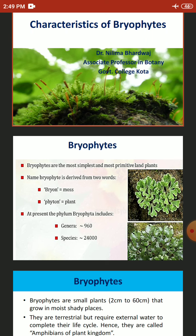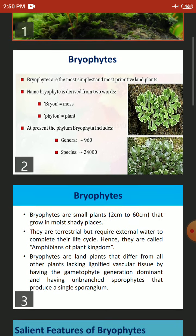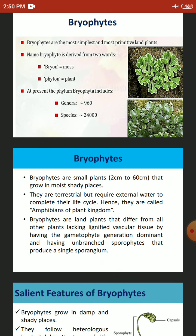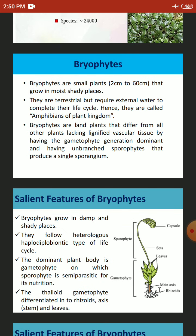They have a leafy or thaloid green plant body which is completely adapted to land habit, but they still depend on water for sexual reproduction. Bryophytes are land plants that differ from all other plants, lacking lignified vascular tissue, having the gametophytic generation as the dominant generation, and having unbranched sporophytes that produce a single sporangium. Bryophytes grow in damp and shady places.